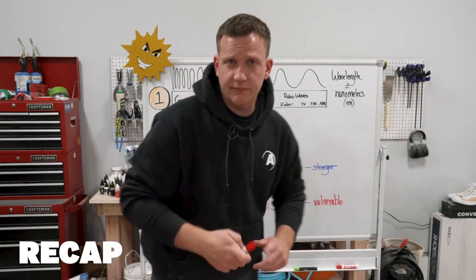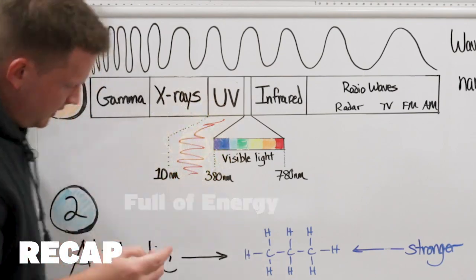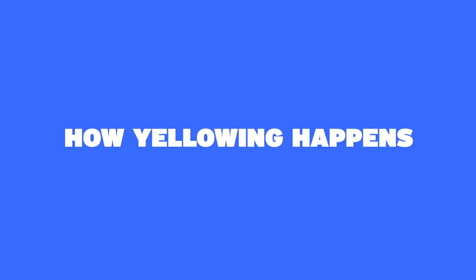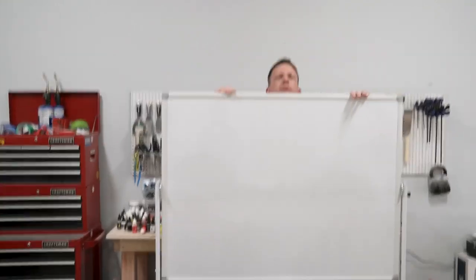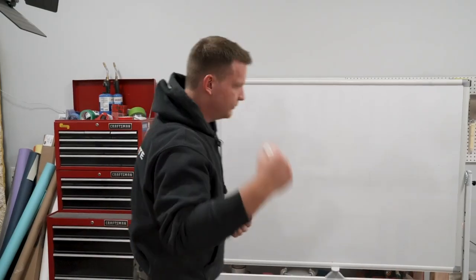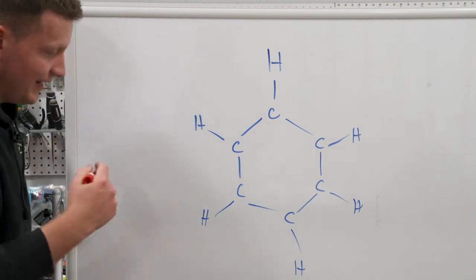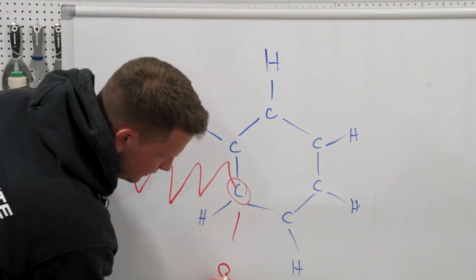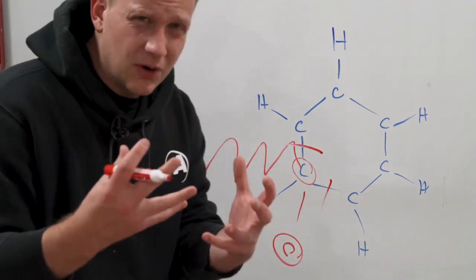Let me recap for two seconds. Number one, we have UV light within this spectrum that's full of energy and coming in hot for our resin. Number two, most of the epoxies you're using that yellow are aromatic, which means they're a little bit more vulnerable. So how does yellowing happen? UV light — those photons at a certain wavelength — actually come in with all that energy and knock loose one of these molecules, creating what we call a free radical. That free radical being gone means the ring is broken and breaking down. That's what we mean when we say UV light actually starts to break down your resin.